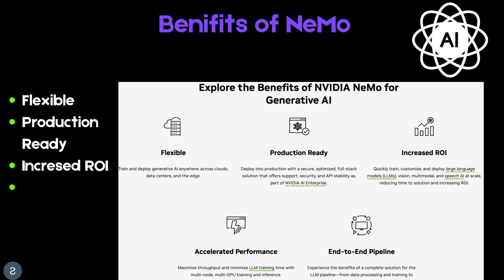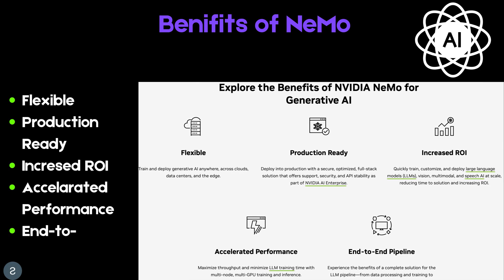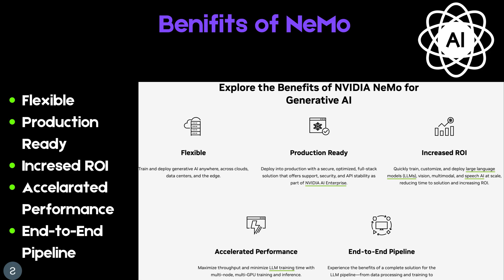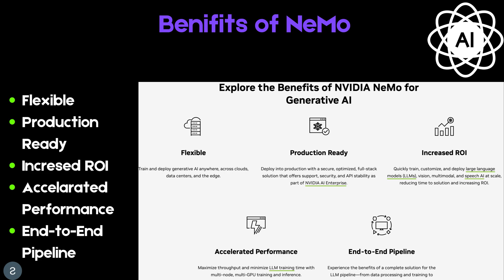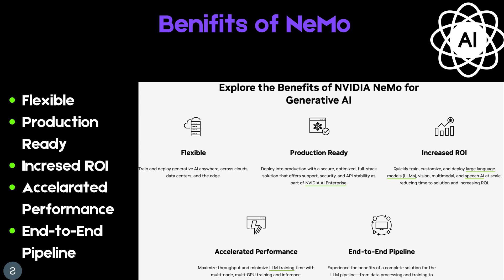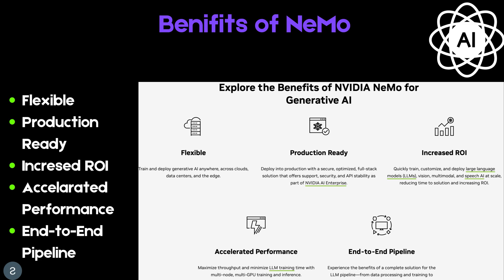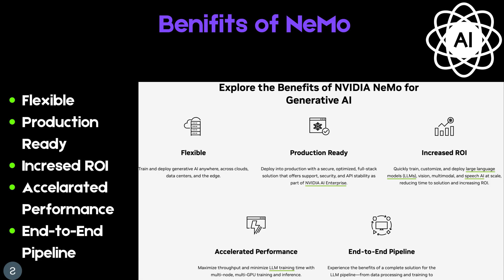The benefits of Nemo include: first, flexible training and deployment of generative AI anywhere — across cloud, data center, and the edge. Second, production-ready deployment with a secure, optimized full-stack solution offering support, security, and API stability as part of NVIDIA AI Enterprise. Third, increased ROI by quickly training, customizing, and deploying large language models, multimodal, and speech AI at scale, reducing time to solution. Fourth, accelerated performance with multi-node, multi-GPU training and an end-to-end pipeline from data processing to inference.